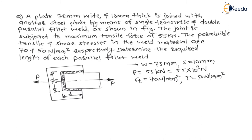We need to determine the required length of each parallel fillet weld. The total load of 55 kN is shared by the transverse fillet weld as well as the parallel fillet welds.